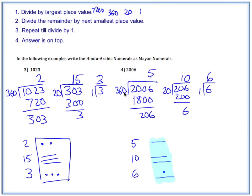Alright, welcome back. So you should have first divided by 360, because that's the largest one that goes in. And we got 5, with a remainder of 206. Then we divide 206 by 20, which is 10, with a remainder of 6. Then we divide 6 by 1, which is 6. And so our numeral is going to be 6, 10, 5, vertically here. So here is 6, 10, and 5. And so all in all, this is 2006 in Mayan. So that is how to convert to and from Hindu-Arabic numerals and Mayan numerals.